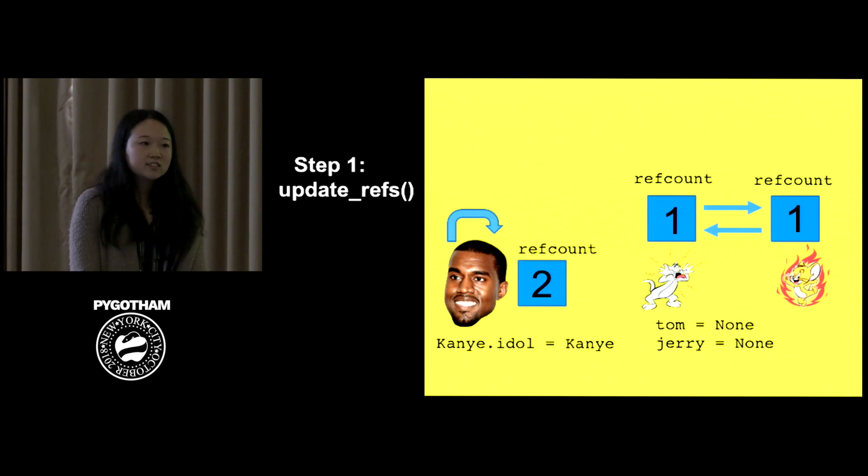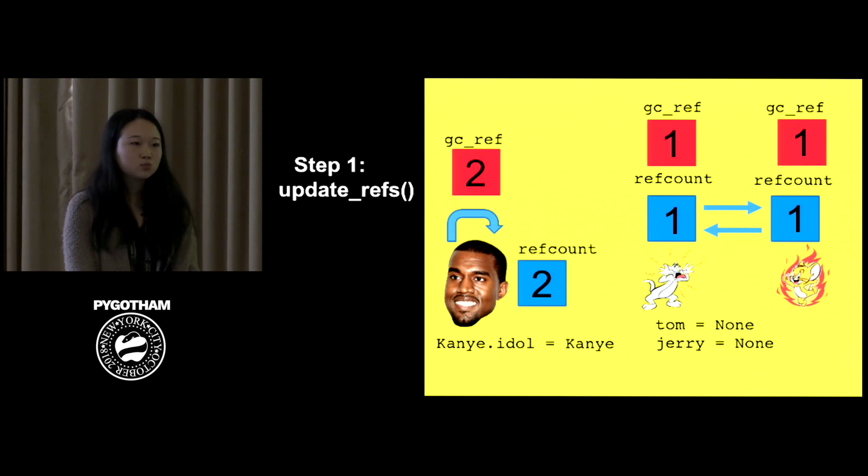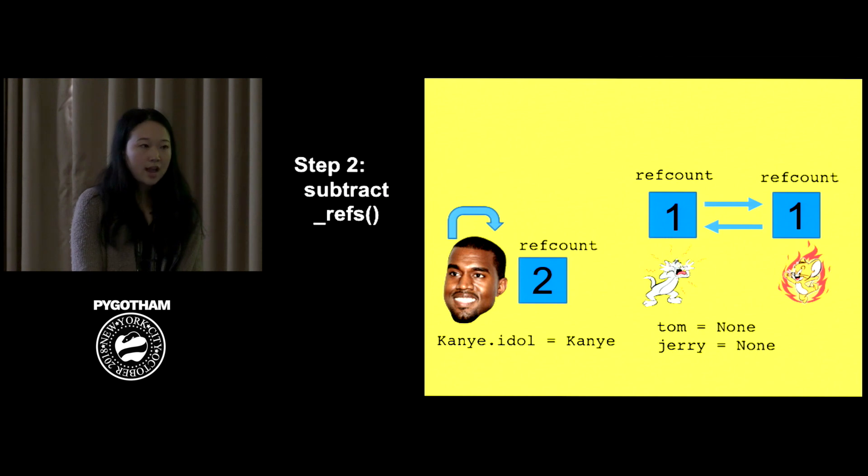So once again, let's look at how this works. So let's say that we have this reference cycle that we're stuck with with Tom and Jerry, but we also have a living object, Kanye, that has two references because he's referencing himself. So the first step is you have to update the references, meaning we just copy the reference counts. This is because we will eventually change it and we don't want to affect the actual program when we're doing the garbage collection. So since Kanye has two, he has two reference counts. GC ref of Tom and Jerry will be set to one. After we do this, we're going to subtract all the references objects have to each other. So since Tom is referencing Jerry, Jerry's reference count will go down by one. So one to zero. Same thing with Tom. Tom's reference count will go from one to zero. And since Kanye is referencing himself, his reference count will also decrease by one. So now he'll only have one reference count.